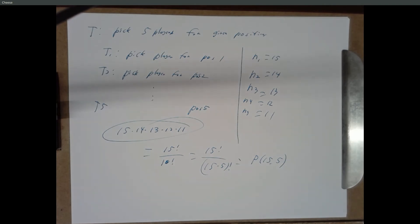So why is that a permutation instead of a combination? It's assuming all the starting positions are essentially the same category. If we simply said pick five people to be on the team, then it doesn't matter the order in which we pick them. Person A, B, C, D, E is the same team as E, D, C, B, A. That's a pure combination question: how many ways can you pick five people out of 15?